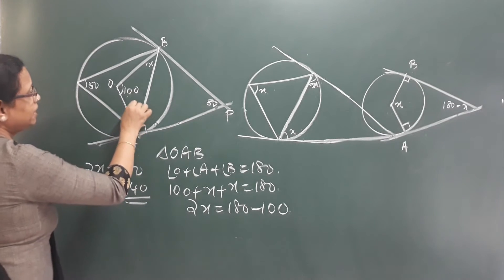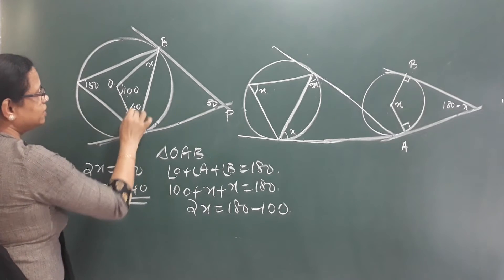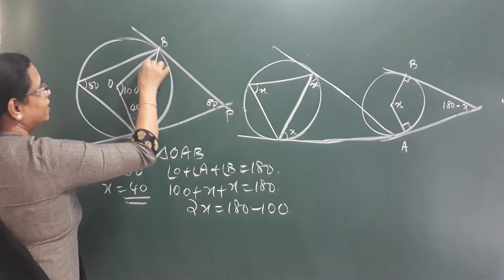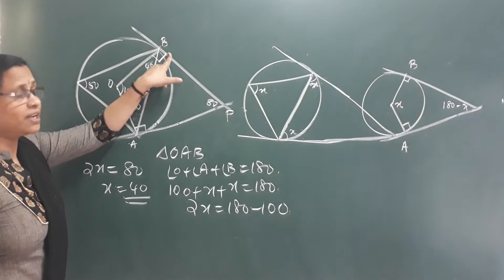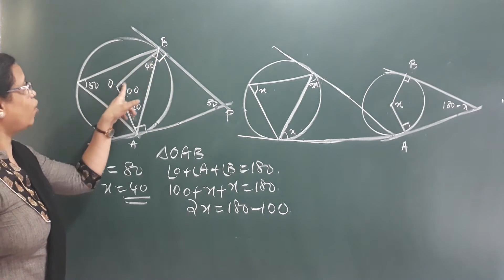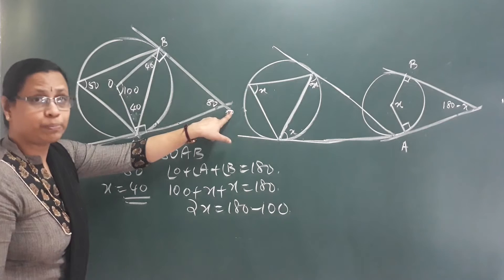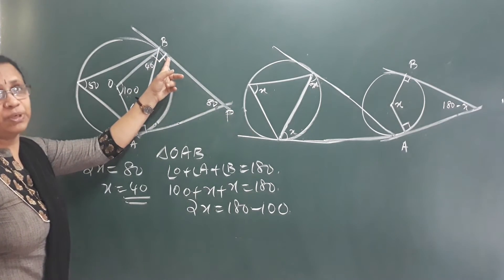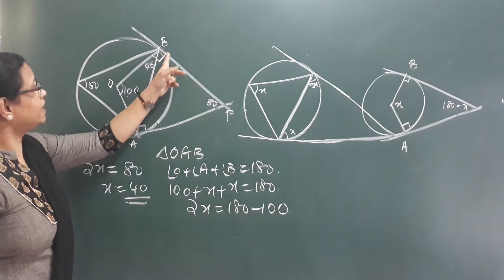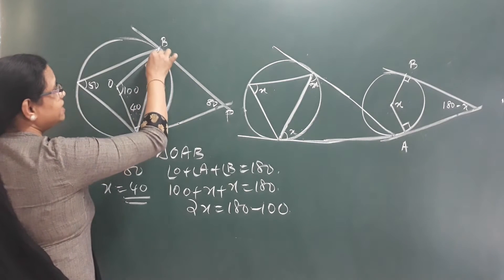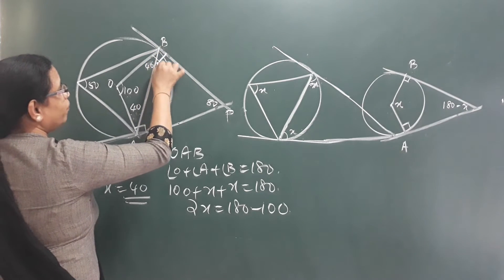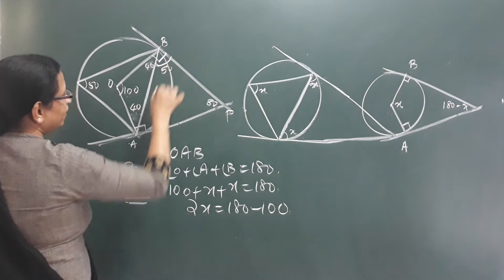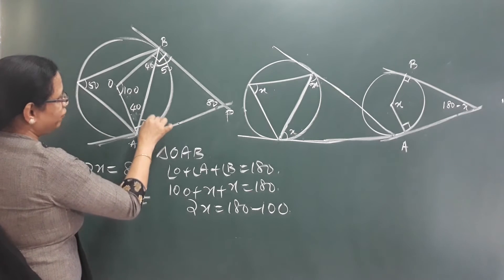x is equal to 40. So this angle x is 40. This angle is 40. That means OB is perpendicular to PB. So this angle is 90. And this angle is 50.